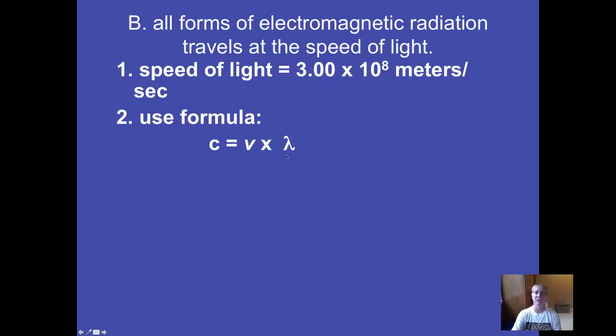Greek symbol lambda, wavelength. Greek symbol nu, frequency. This number, speed of light, never changes. So if we know the speed of light and we know the wavelength, we can calculate frequency. How are they inversely related? One more time, little wavelength has to mean big frequency, because this number never changes.